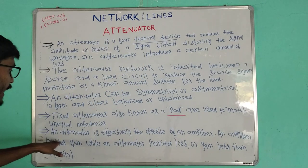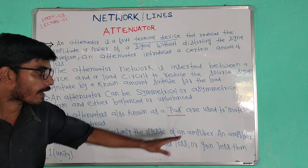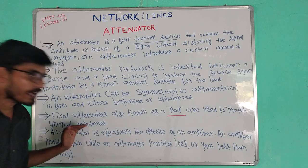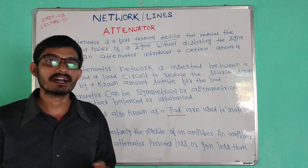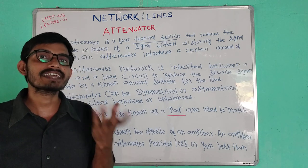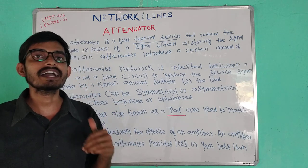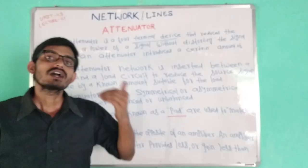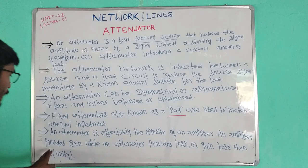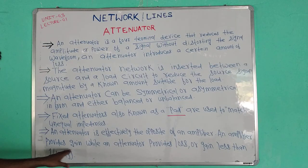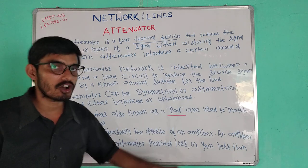An attenuator is effectively the opposite of an amplifier. An amplifier takes a weak signal and makes it a strong signal, while an attenuator provides loss rather than gain.